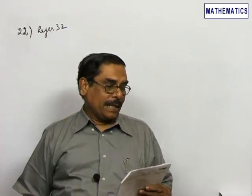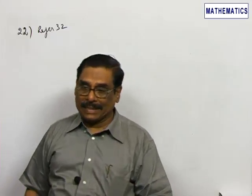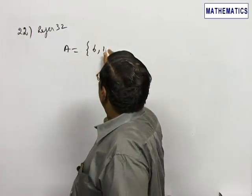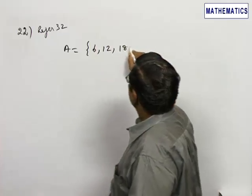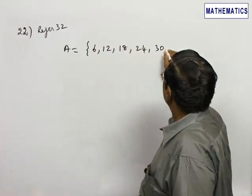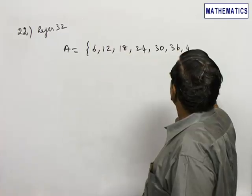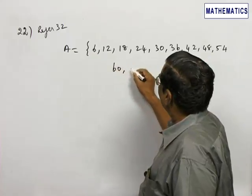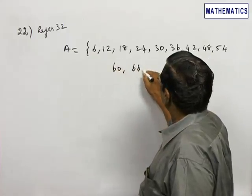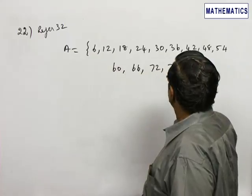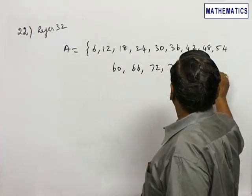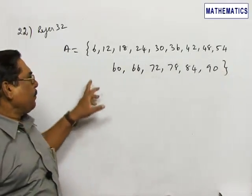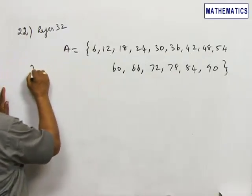The event of selecting a number divisible by 6, I call it as A, will start with 6. From 1 to 90, there are 15 such numbers.